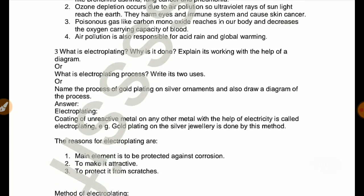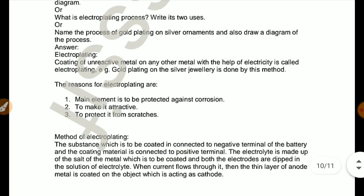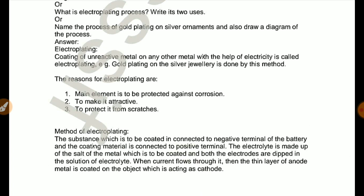What is electroplating? What is it done? Explain its working with the help of diagram. Or what is electroplating process? Write its two uses. Name the process of gold plating on silver ornaments and also draw a diagram of the process. Electroplating: Coating of unreactive metal on any other metal with the help of electricity is called electroplating. Example: gold plating on silver jewelry is done by this method. The reasons for electroplating are: to be protective against corrosion, to make it attractive, to protect it from scratches.